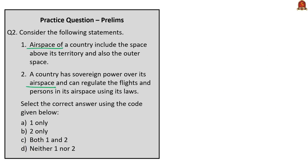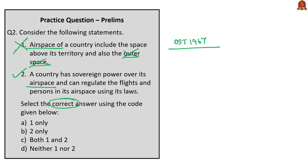The second question is about airspace of a country. Statement one says airspace includes outer space — this is incorrect, as the Outer Space Treaty of 1967 states that airspace ends where outer space begins, and outer space is free. Statement two says a country has sovereign power over its airspace and can regulate flights and persons using its civil aviation laws — this is correct. So the correct answer is option B: two only.